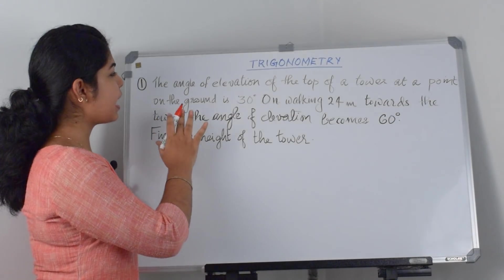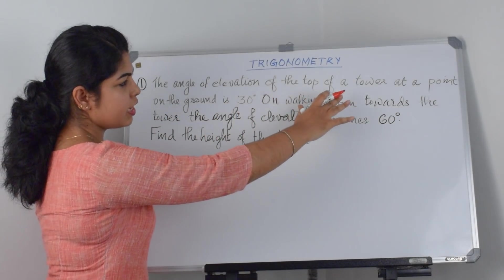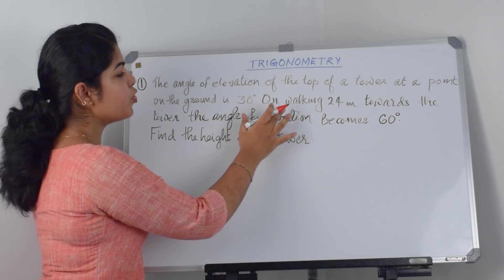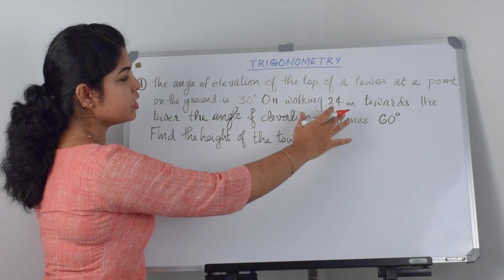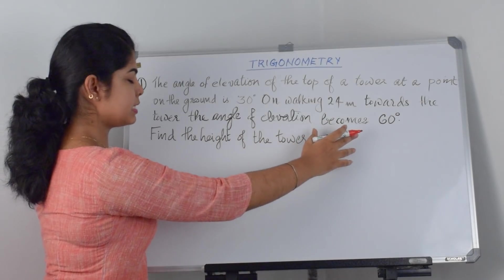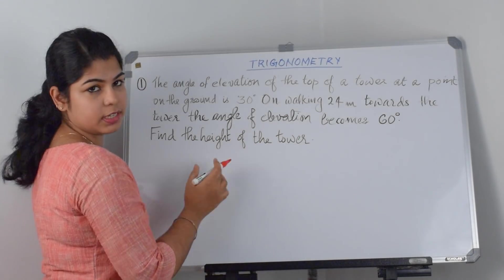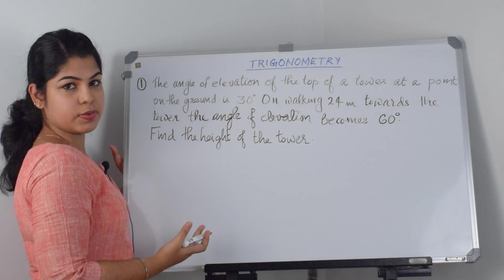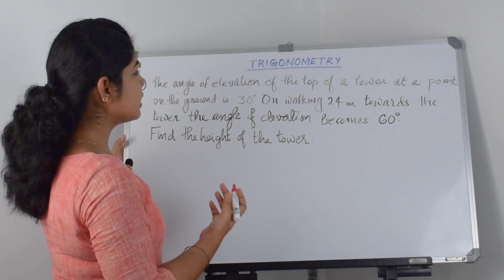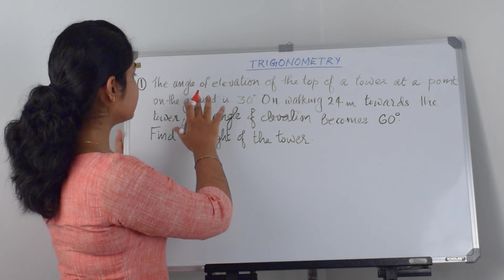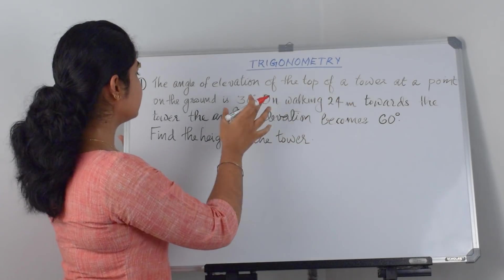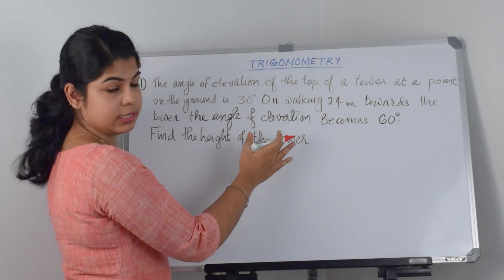Here the question is: the angle of elevation of the top of a tower at a point on the ground is 30 degrees. On walking 24 meters towards the tower, the angle of elevation becomes 60 degrees. Find the height of the tower. First we'll draw the figure. It is given that the angle of elevation of the top of the tower from a point on the ground is 30 degrees.